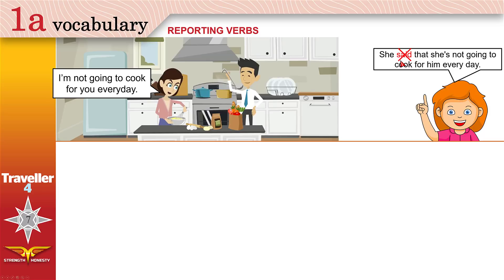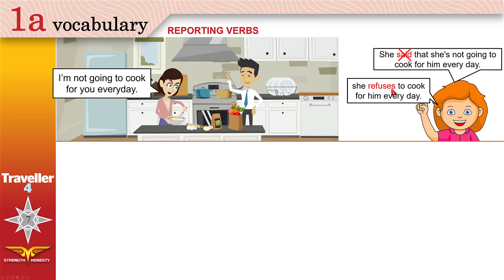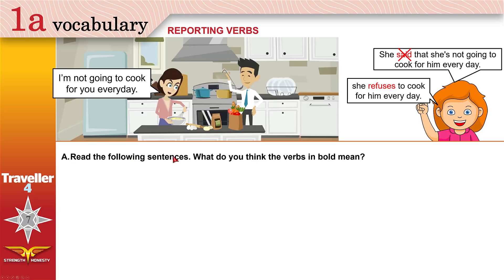Reporting verbs means we don't want to use 'say' or 'tell.' How can you tell others what she said without using 'say' or 'tell'? You can use a verb like 'refuse.' She refuses to cook for him every day. When you refuse, you say no — you don't accept. This gives the same meaning. Refuse is one of the reporting verbs.